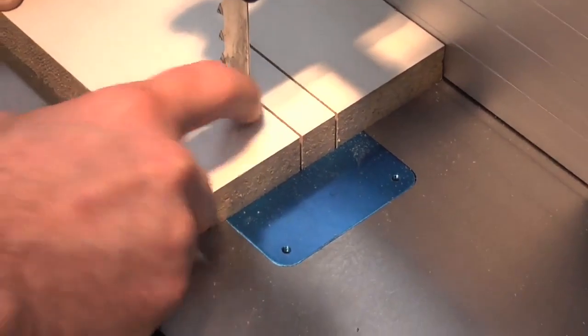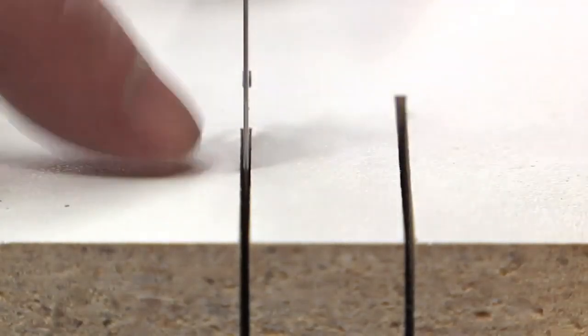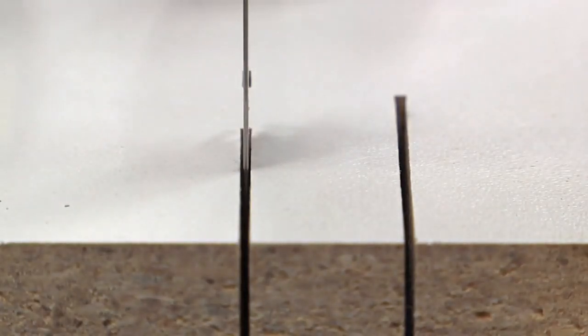This demonstrates that we've got our fence properly set because we've got the same gap on the left and right-hand side of the blade.